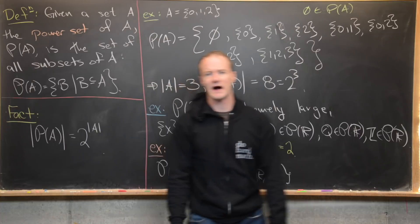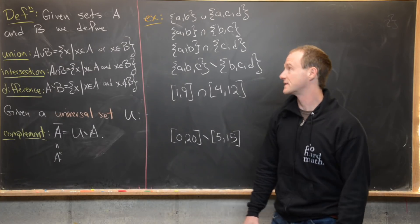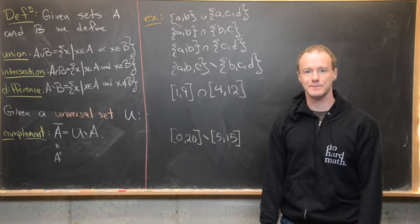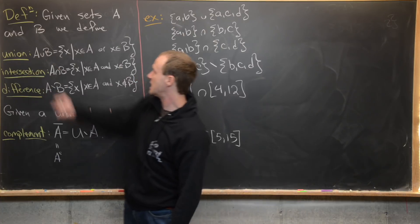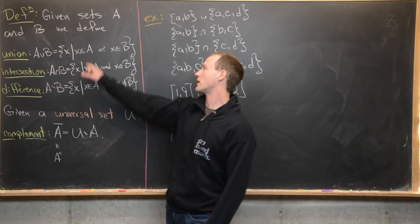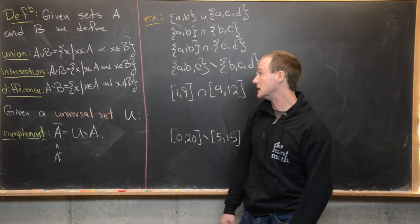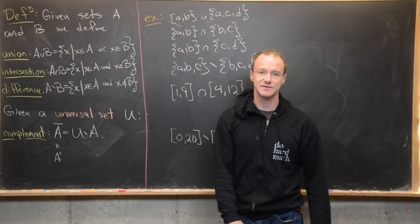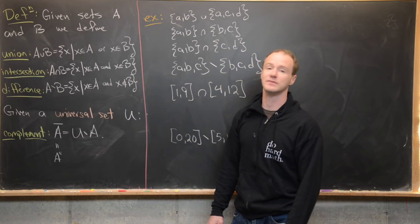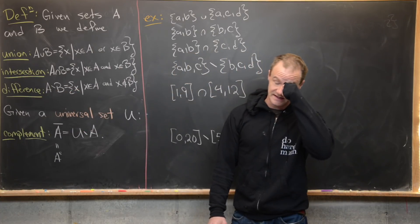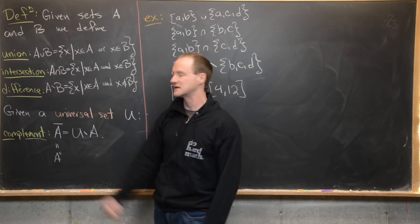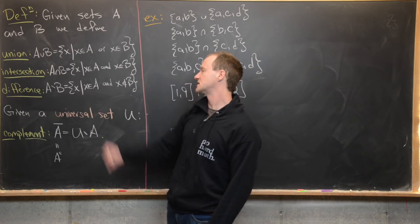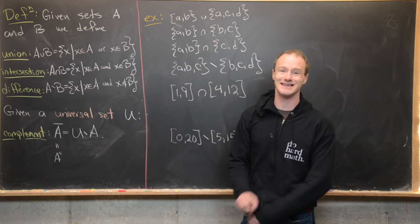Now we're going to look at a few more ideas from elementary set theory: union, intersection, set difference, and complement. Given sets A and B, we define their union — written A ∪ B — as all elements x where x is in A or x is in B, so union corresponds to an 'or' statement. The intersection — written A ∩ B — is all x where x is in A and x is in B.